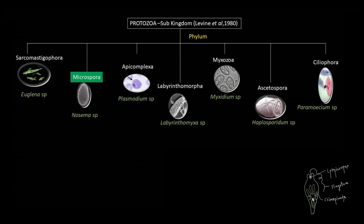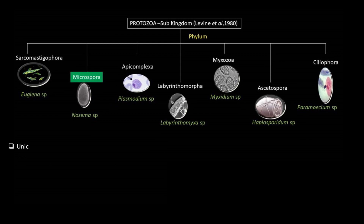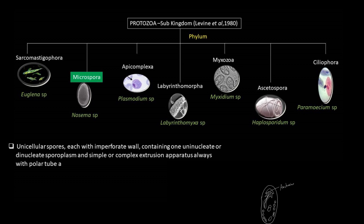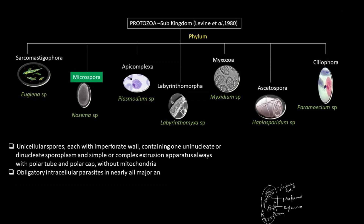In the case of Microspora: unicellular spores, each with an imperforated wall containing one uninucleate or dinucleate sporoplasm, and a simple or complex extrusion apparatus, always with polar tube and polar cap, without mitochondria. They are obligatory intracellular parasites in nearly all major animal groups.